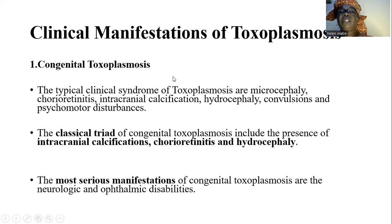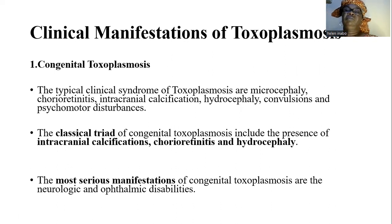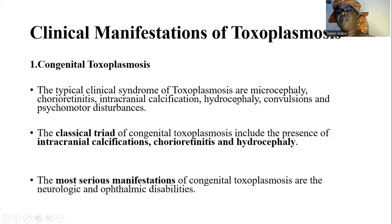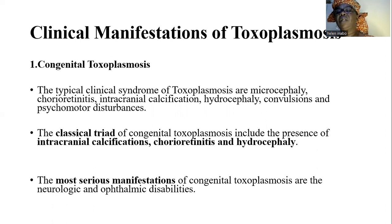We'll look at the clinical manifestations of toxoplasmosis. The first one is congenital toxoplasmosis, which occurs in the unborn fetus or newborn. The typical clinical syndrome includes microcephaly — where the head is small — chorioretinitis, intracranial calcifications, hydrocephaly — where fluid has collected in the head — convulsions, and psychomotor disturbances.